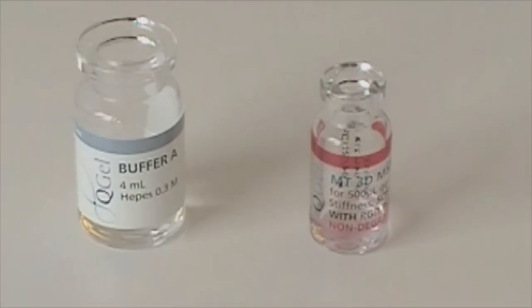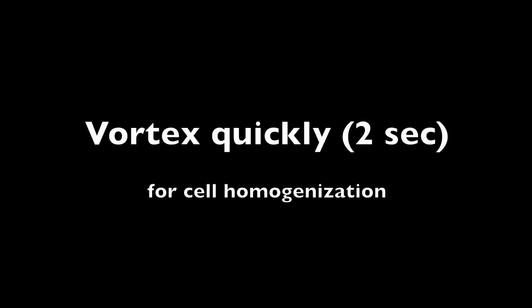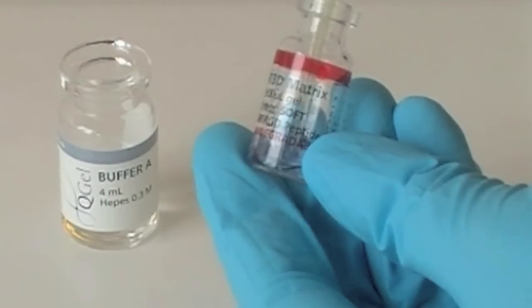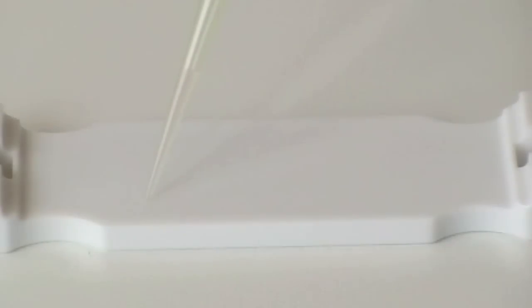Vortex again gently for about 2 seconds. Pipette the solution out and quickly apply drops on the caster. Drops can be 30 to 60 microliters in volume depending on the size of the disc that you want.